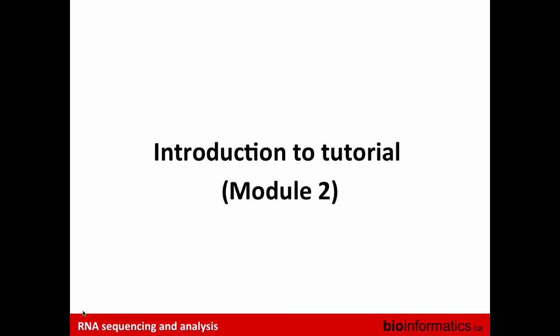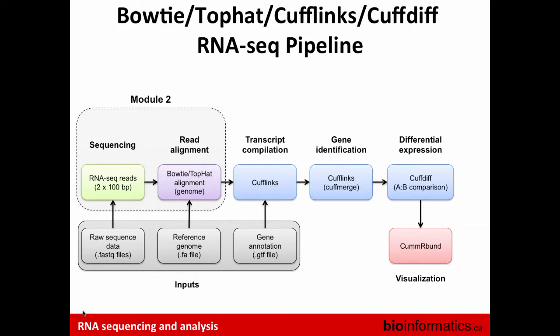This leads us to the tutorial for module two, where we'll take the FASTQ files from the previous module and run TopHat/Bowtie to get BAM alignment files. If we have time, we'll also run FastQC and RSeQC to generate the QC plots you've seen. All the commands are provided — if you want to take them and run them in your own lab, you're more than welcome.